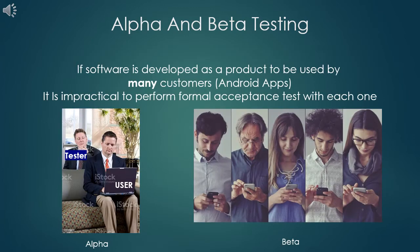First, let us see about alpha testing. In alpha testing, a group of users or customers will be called to the developer's office and will be asked to test the software. Informally, the tester or the developer will look over the shoulder of the customer as they use the software and will try to find errors. Thus alpha testing is conducted in a systematic manner by the developers by overseeing the way in which the users use the system.